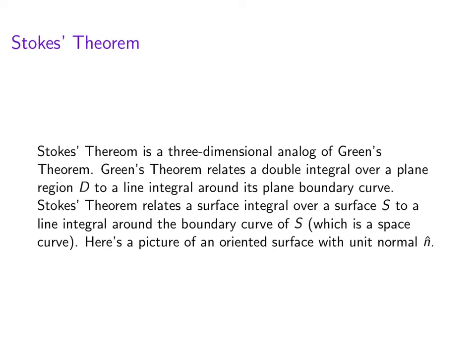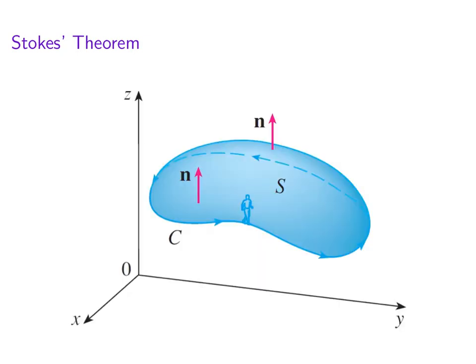Let's take a look at a picture of an oriented surface with a unit normal vector n. Here is an oriented surface with unit vector n. So the vector is orienting the surface. Then you've got the boundary curve C that goes around in a counterclockwise direction when you look from the point of view of looking down on the surface.